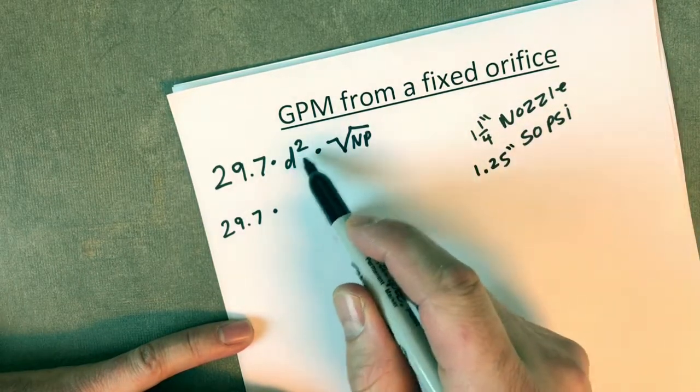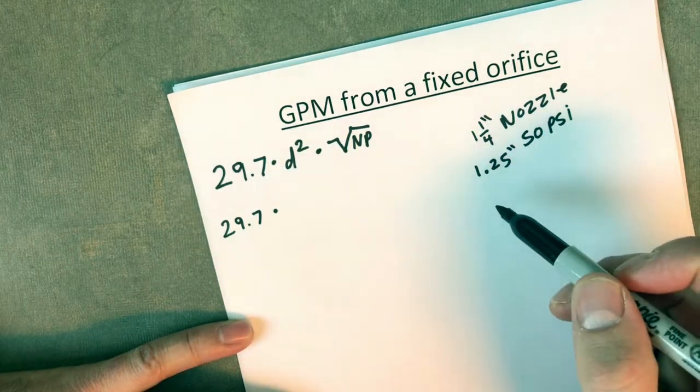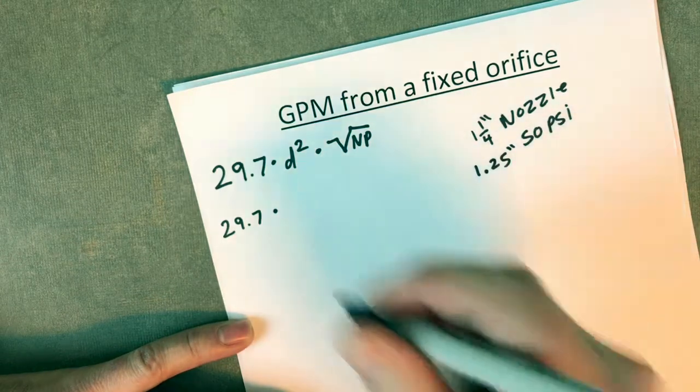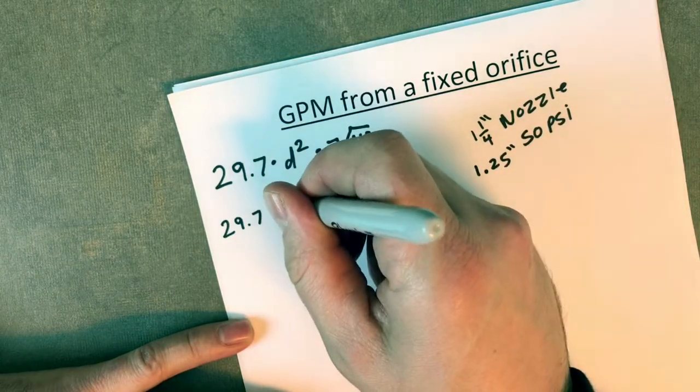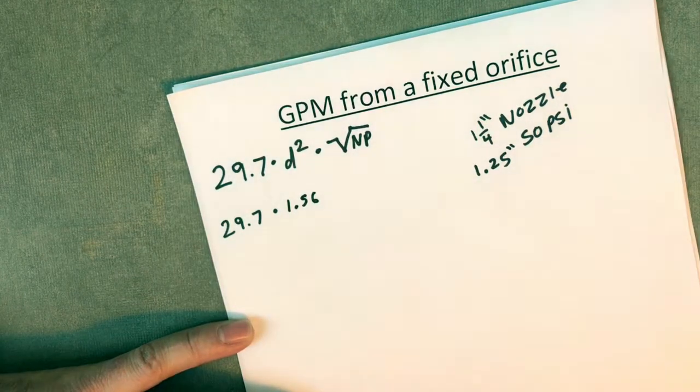We need to multiply that by itself because it's the diameter squared. So 1.25 times 1.25 is 1.56.